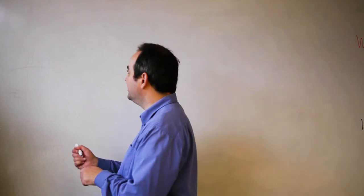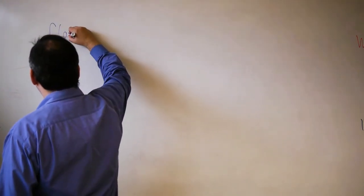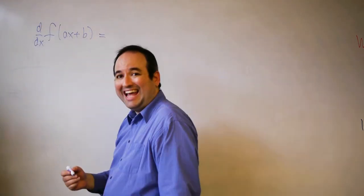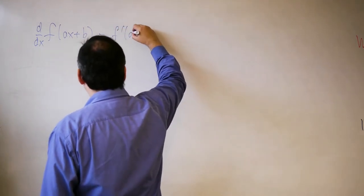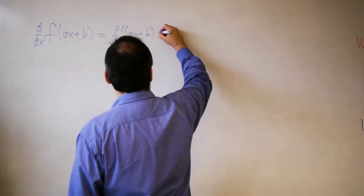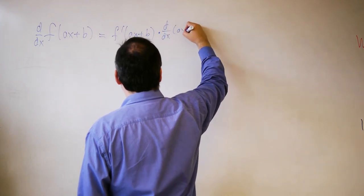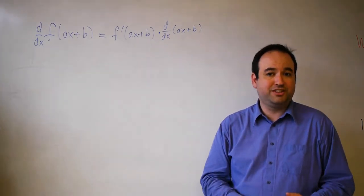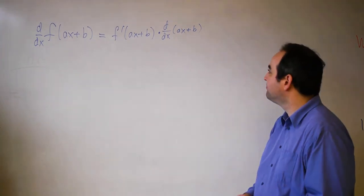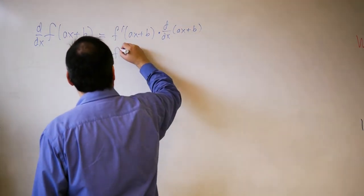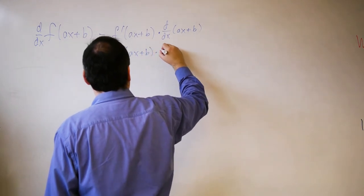Suppose that we have a function of the form f of ax plus b. What happens when we differentiate that function with respect to x? Well, we get f prime of ax plus b, and the chain rule tells us that we have to take the derivative of what's inside. So we multiply it times the derivative with respect to x of ax plus b. Here, a and b represent constants — in the earlier problem, a was 3 and b was pi. The derivative of a constant times x is just the constant, so we're left with f prime of ax plus b times a.